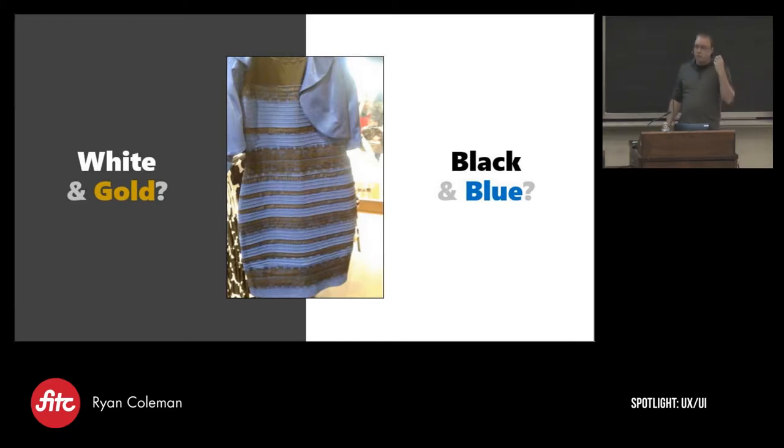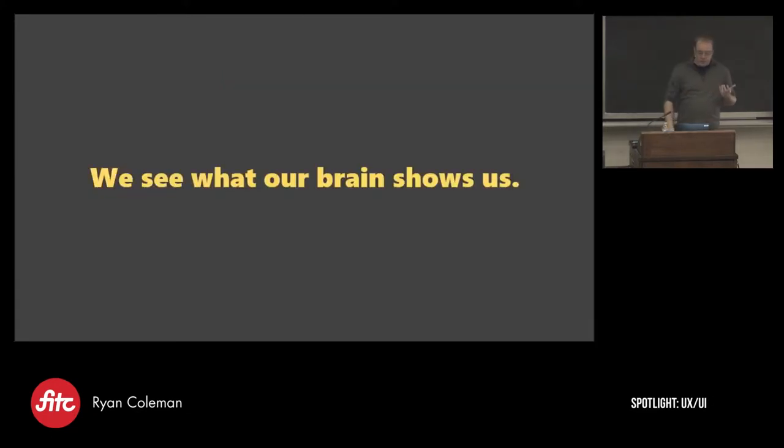And that really is that our brain, you know, I know the dress is blue and black. No matter how much I look at it, I usually see a yellow and white or a yellow and blue. I have found if you kind of cover most of it and look through like a hole in your finger, it tends to go blue and black. But it shows you that we see what our brain shows us. Your brain is actually making decisions and interpreting what it's looking at and showing you its best guess at, hey, this is what the world looks like.